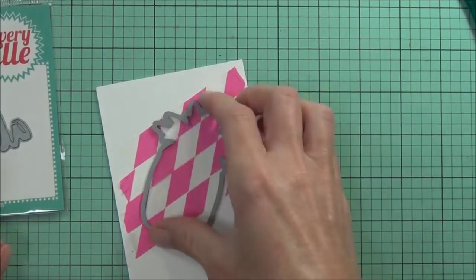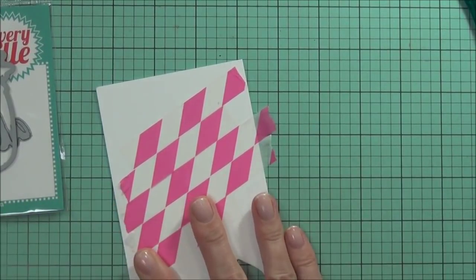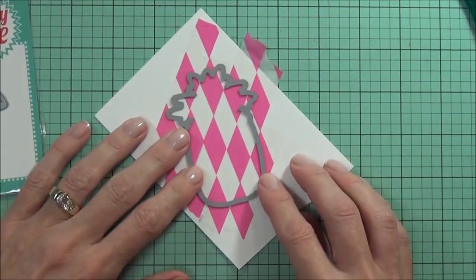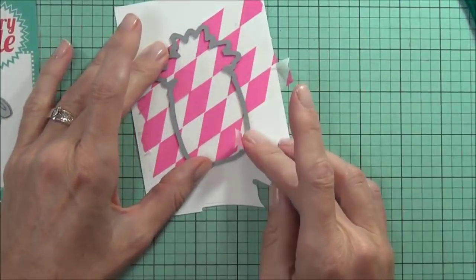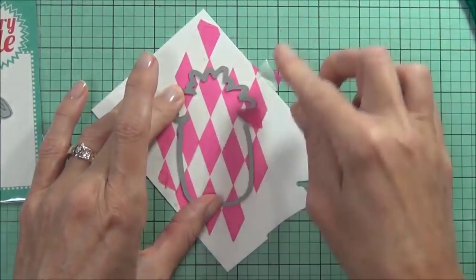The die that I've got today is from Avery Owl and it matches the stay fresh stamp set. I don't know, there's something about pink pineapples - I think they're so cute. So I'm just gonna hold that in place with a piece of the washi tape and then I can just run that through my die cutting machine.